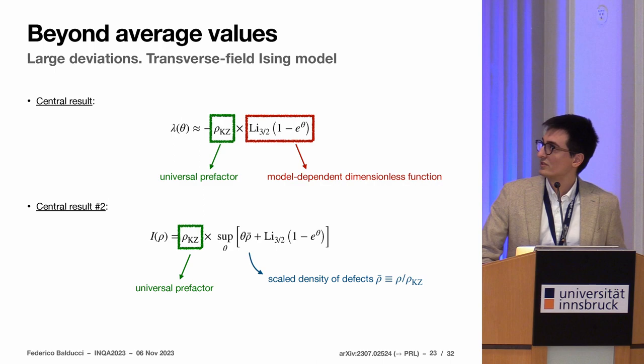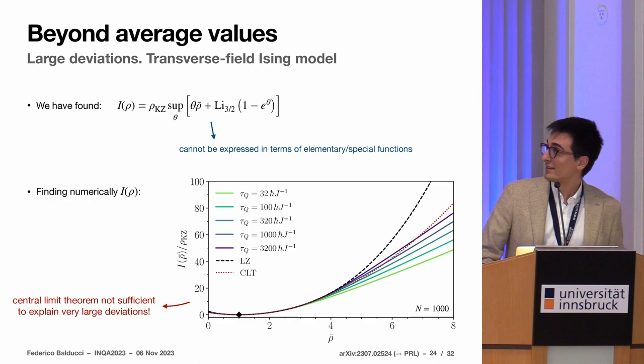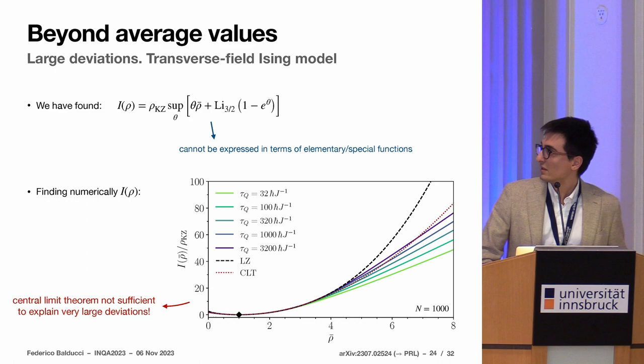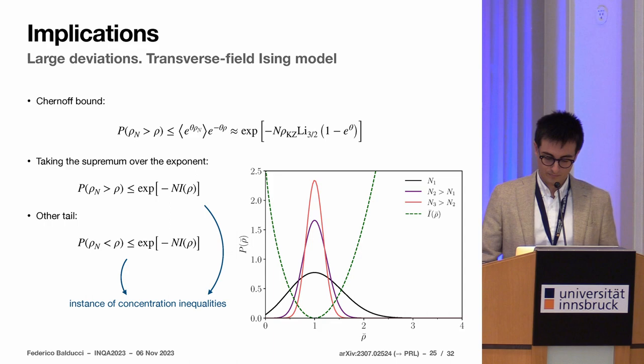All the information about the protocol of annealing comes into the Kibble-Zurek average. So there is no competition between different timescales, or length of the system, or whatever. Everything is encoded in the Kibble-Zurek density for the whole probability distribution. When you go back to the rate function by Legendre transforming, this structure remains. This means that basically the Kibble-Zurek average is controlling all the distribution in this sense, that the most probable value is given by the Kibble-Zurek density itself. You see here that if you go to longer and longer annealing times, you fall into it, while you don't fall onto the central limit theorem prediction.